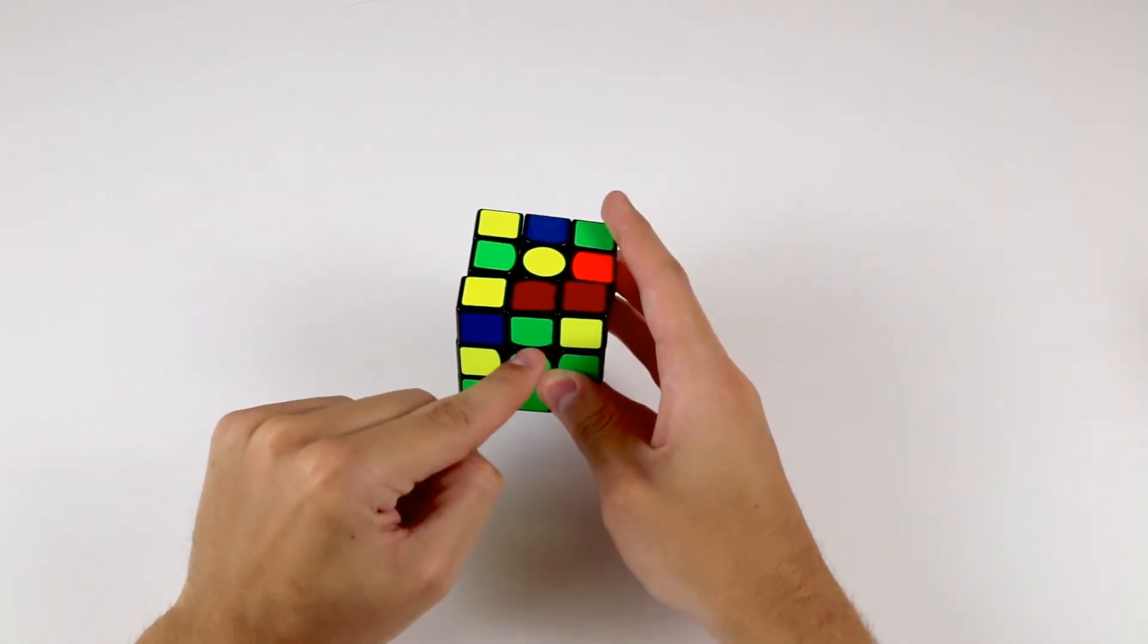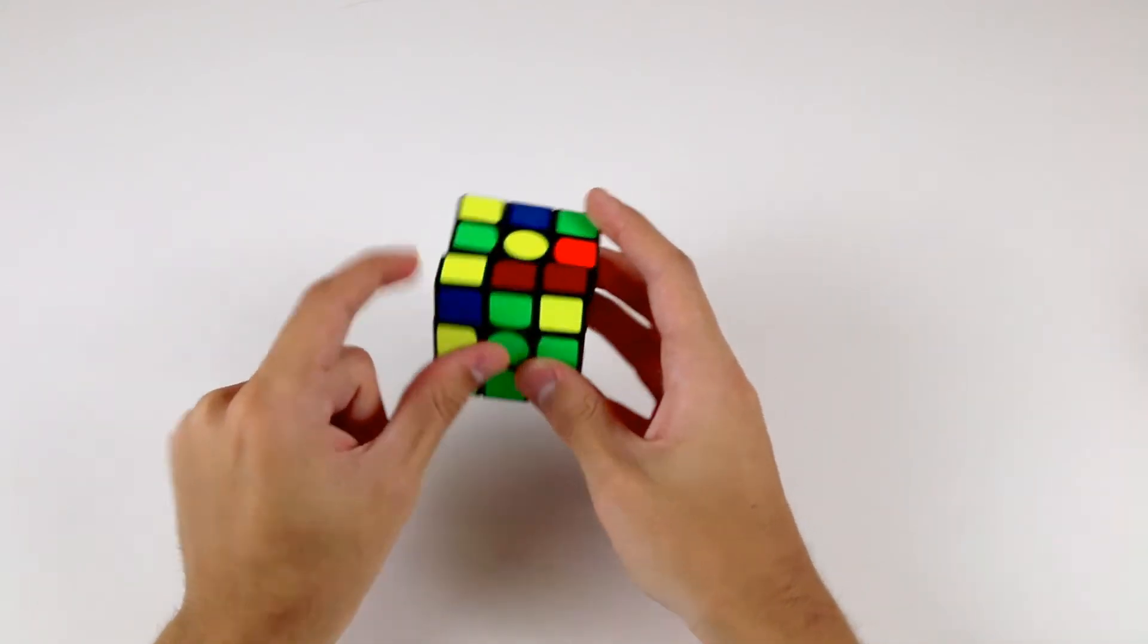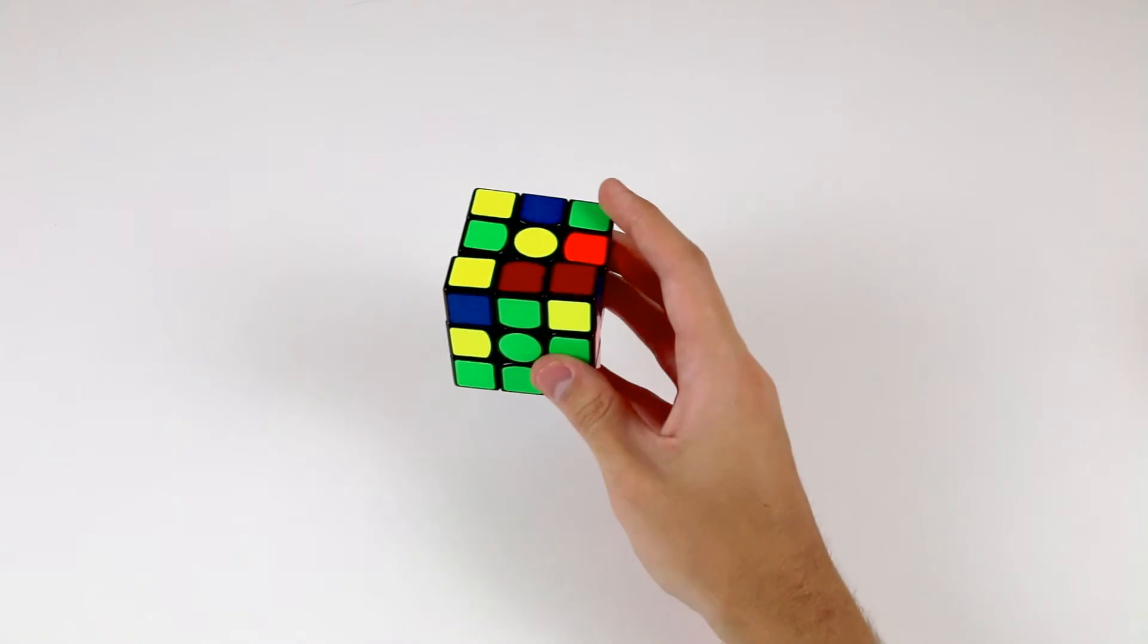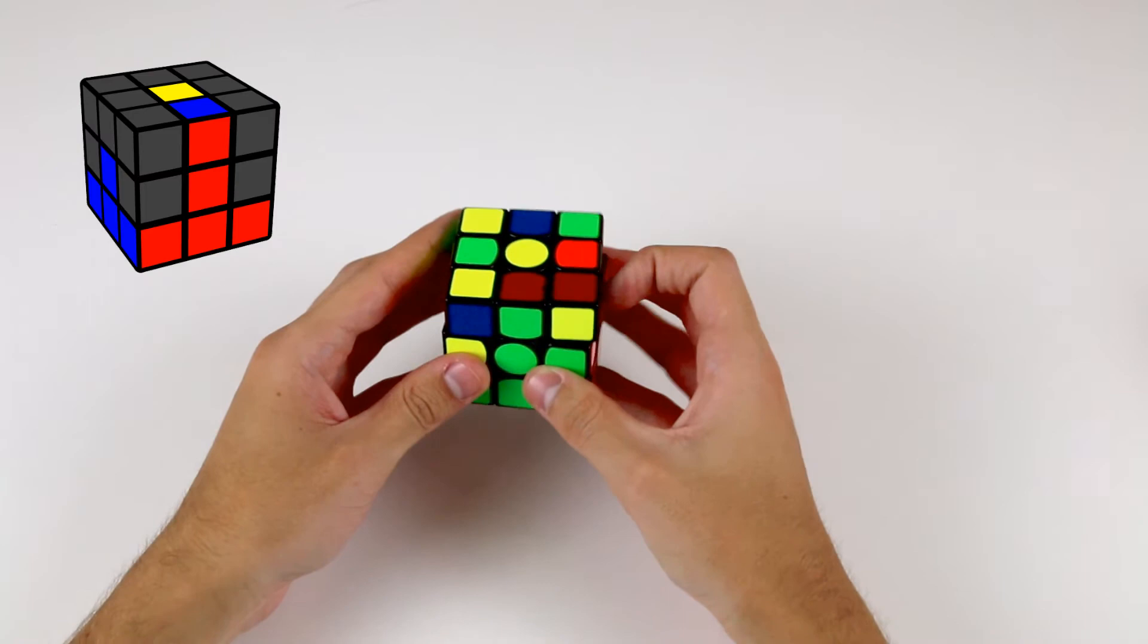Another edge has just popped up here, so it's the green and red edge, which belongs between the red and green centers over here. Our green sticker is already aligned with the green center here, so we don't need to worry. And it's already in the front position. So to move it to the left, we use the same algorithm as before.